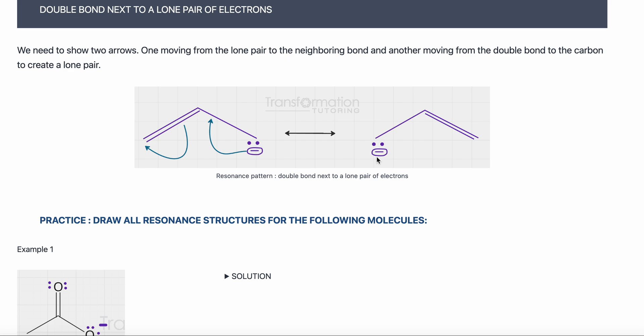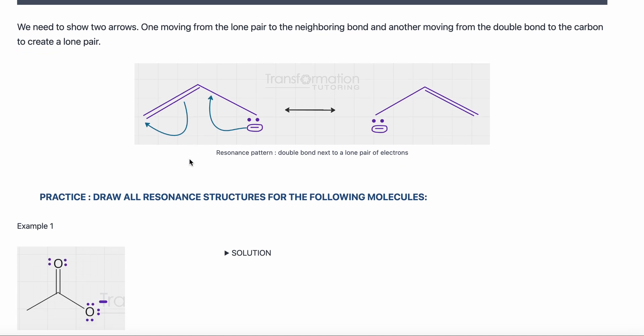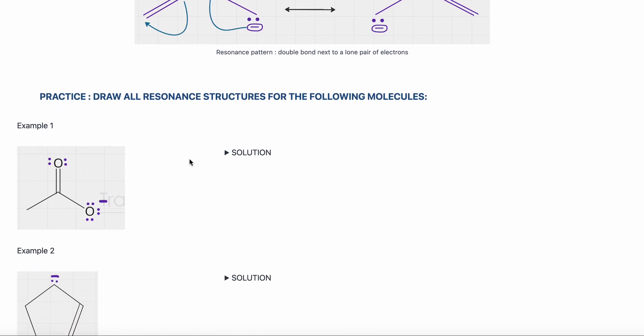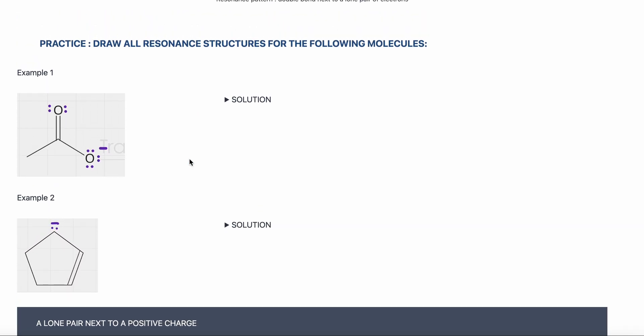These two electrons that used to be in the double bond were used to move over and create a lone pair on this carbon, and there is a negative charge there. This is the most popular resonance pattern.